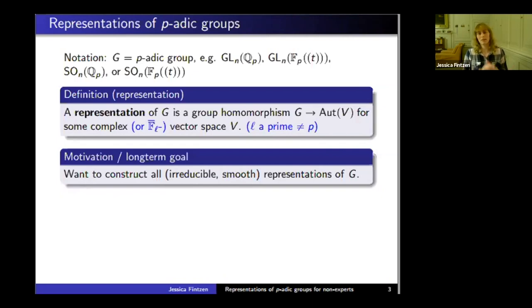Smooth means that the stabilizer of every vector in this vector space V contains an open subgroup. Every vector is stabilized by something rather large. That means the representation, while infinite dimensional, is something we can actually work with and we get a nice category.